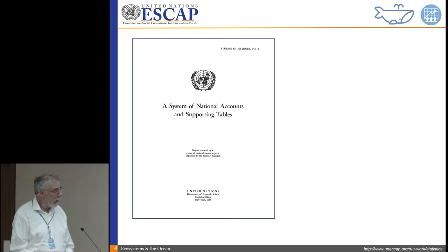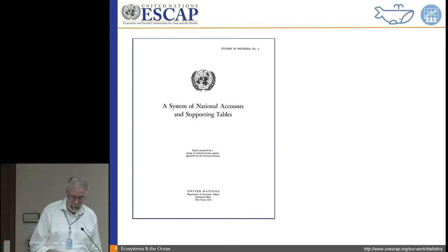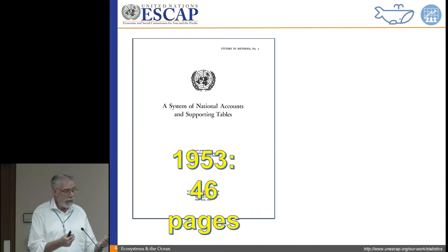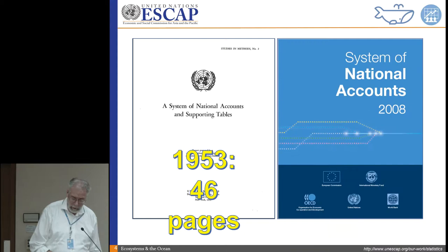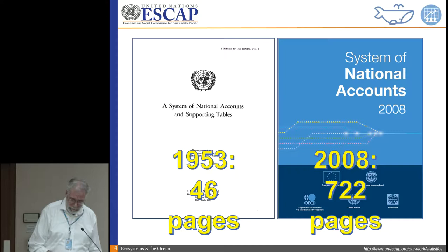In 1953, the System of National Accounts was a 46-page manual. It was developed to deal with the post-war reconstruction of national economies, and it was the main blueprint for 20 years. By 2008, it got a bit more complex — only 722 pages. These are blueprints. They're not the data or the numbers. They're simply the instructions on how to build this complex system.